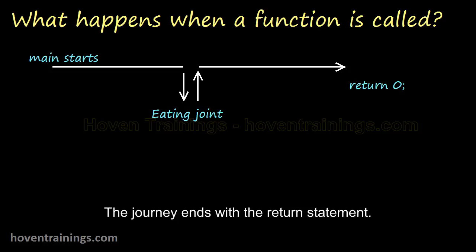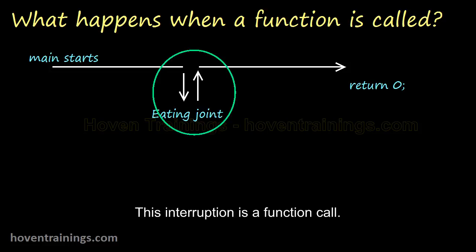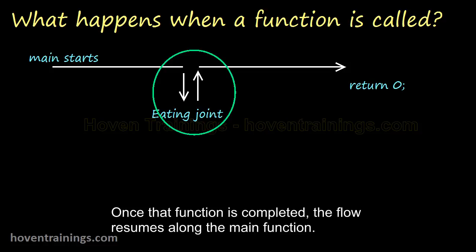The journey ends with the return statement. This interruption is a function call. The control or flow is transferred to a function. Once that function is completed, the flow resumes along the main function.